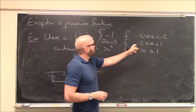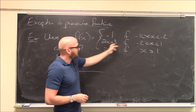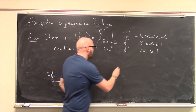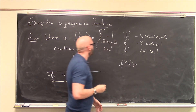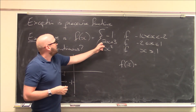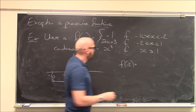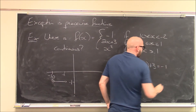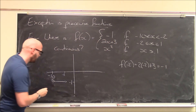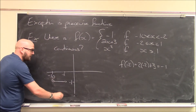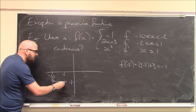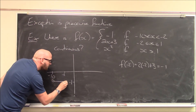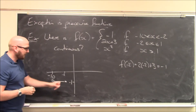Now what happens at x equals negative 2? This next piece defines the function there. f of negative 2 is 2 times negative 2 plus 3, which is negative 4 plus 3, which is negative 1. So this piece actually defines the function to be negative 1 at x equals negative 2 — the same value. So it is actually going to glue together nicely right there.